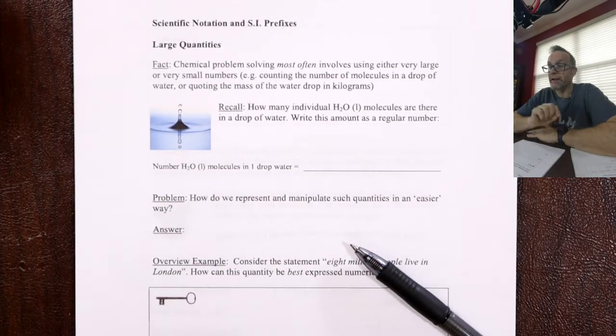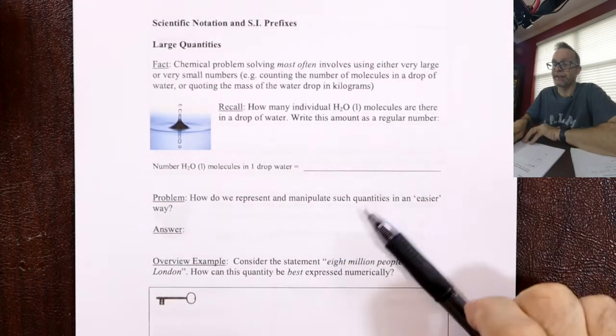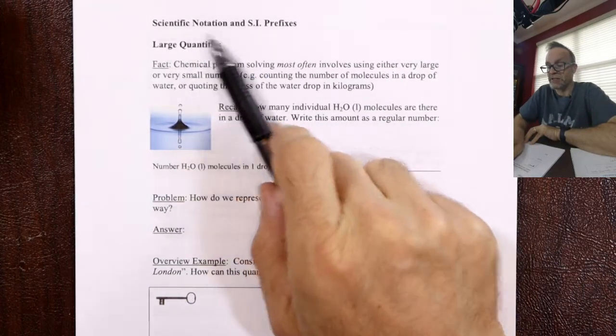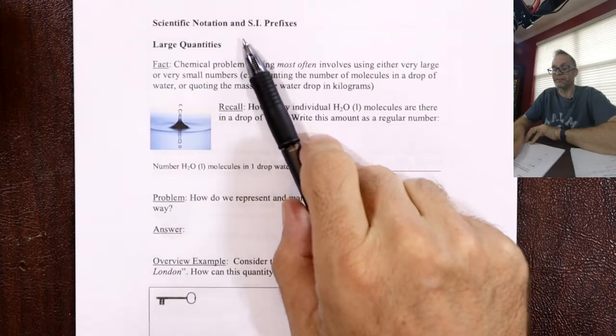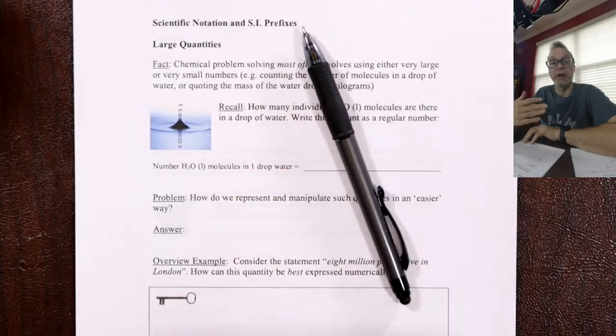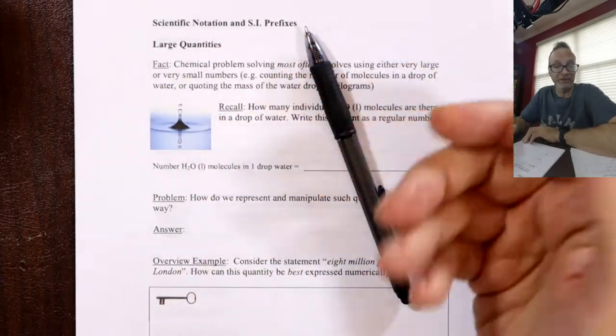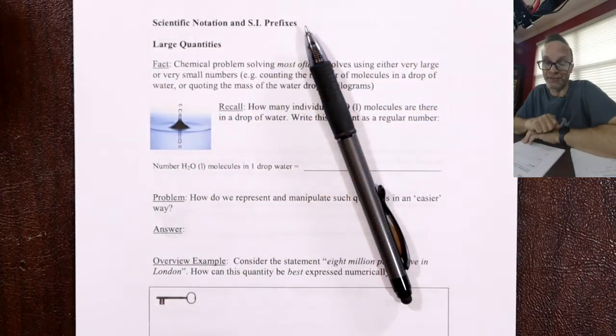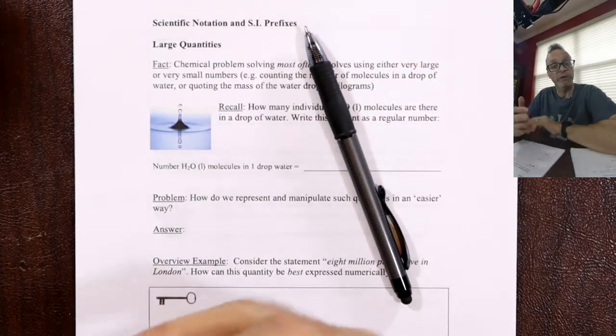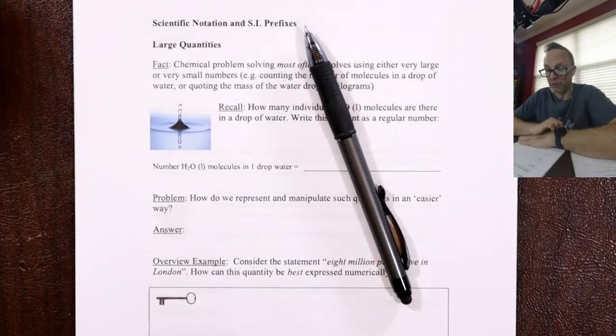We're back. We're going to talk about scientific notation and SI prefixes — basically the number part. We've done the units in the first few pages. Now we're going to do the number, and then we'll combine them to make a quantity.